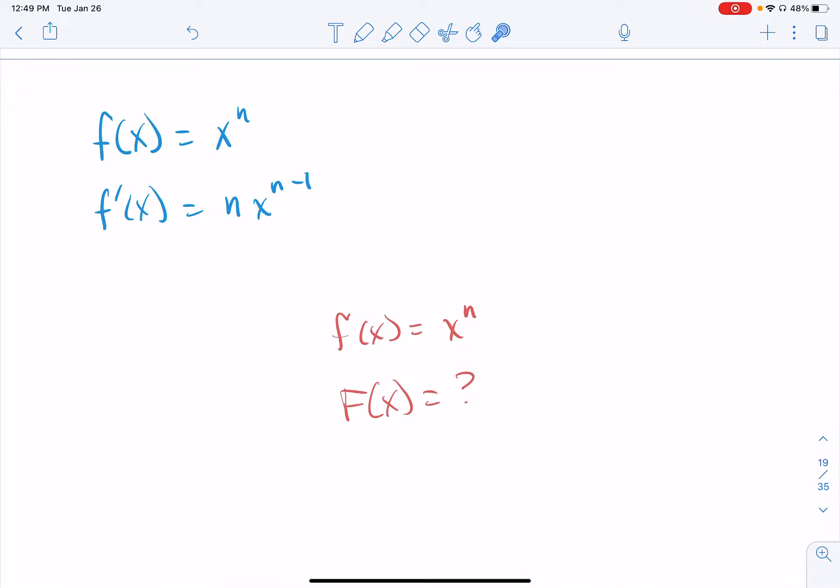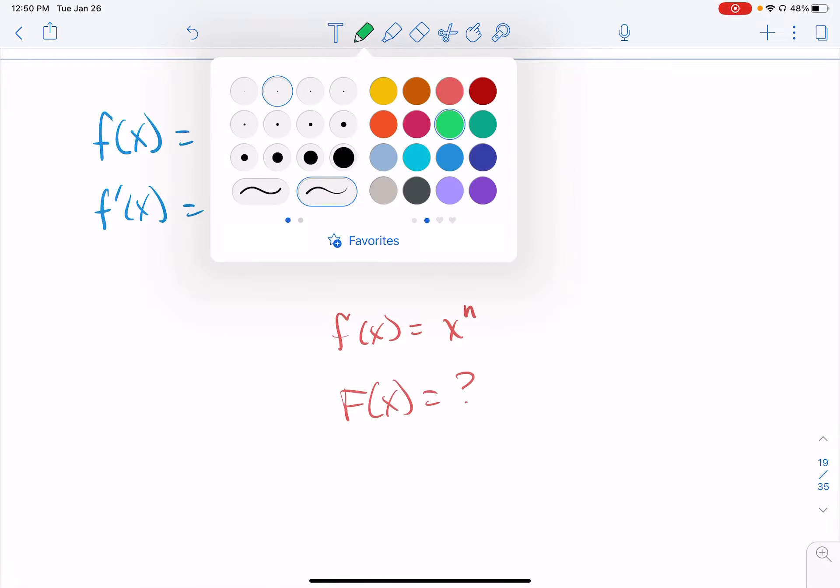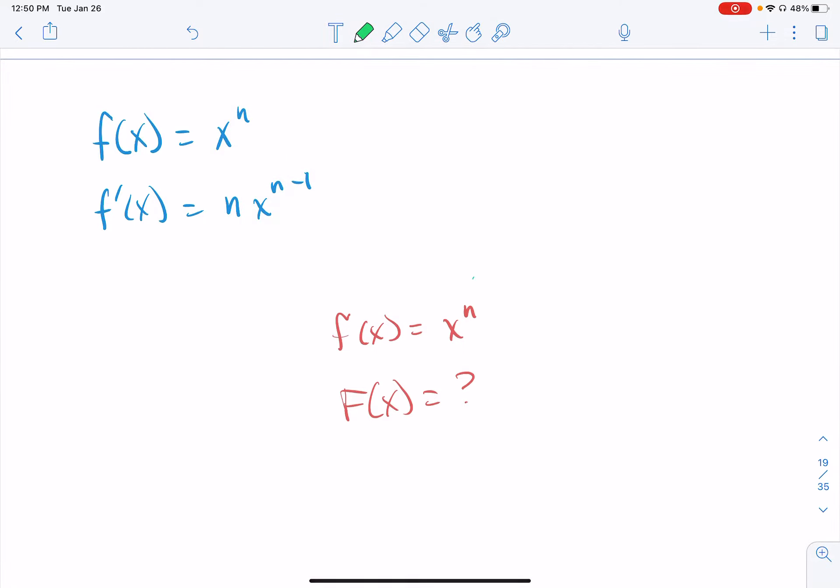The problem is that you can't directly use the derivative rule because this thing doesn't match up with that. So we're going to force it to look like that with a substitution of variables.